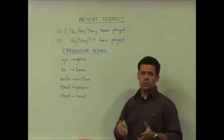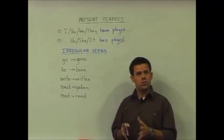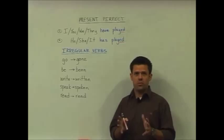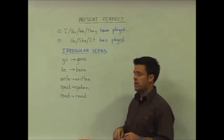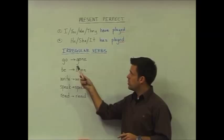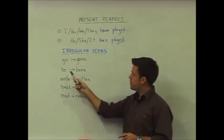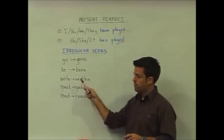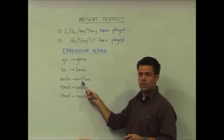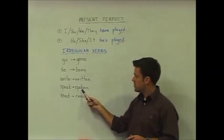With irregular verbs, of course, these past participle forms change quite a bit from its base form of the verb. Here are a few examples. Go moves to gone, be moves to been, write to written, speak to spoken.